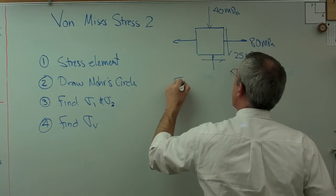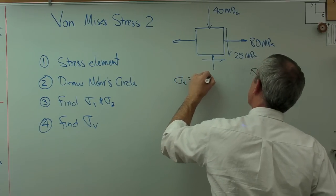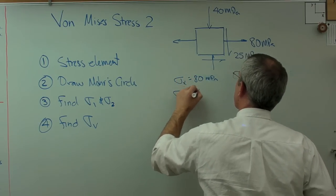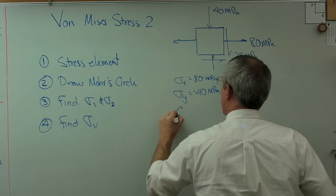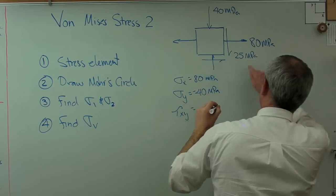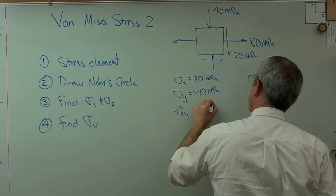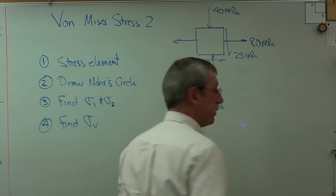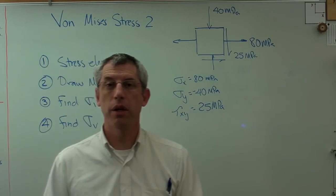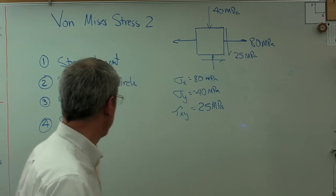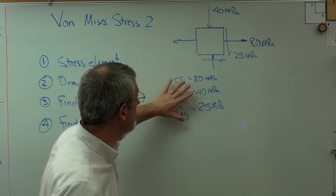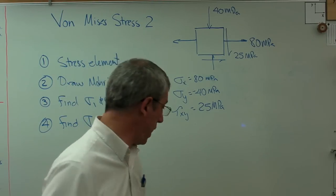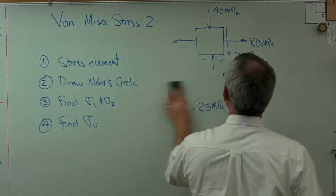So, sigma x is 80. Sigma y is minus 40. And tau xy is positive 25 megapascals. Okay, so there we go. That's enough information to draw Mohr's circle. Okay, and so let's see, make sure I stay in frame here. I'm going to erase this here in a second. We're going to draw Mohr's circle using the sigma tau axes like we always do.